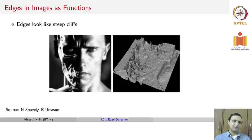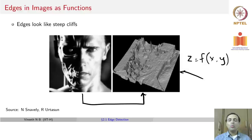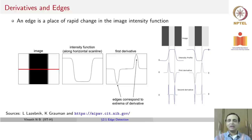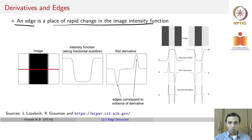Images can be looked at as matrices or as functions. When you talk about images as functions, edges look like very steep cliffs. Our job is to find where these steep cliffs exist. That brings us to derivatives and gradients — because if you need to find steep cliffs, going from one pixel to the next there is a huge change in intensity. In some sense, an edge is a place of rapid change in the image intensity function, and can effectively be measured using a derivative or a gradient.